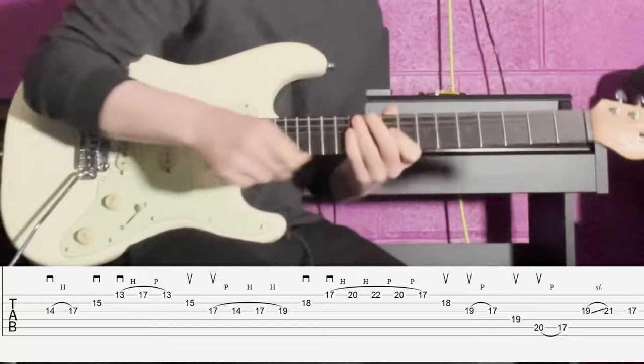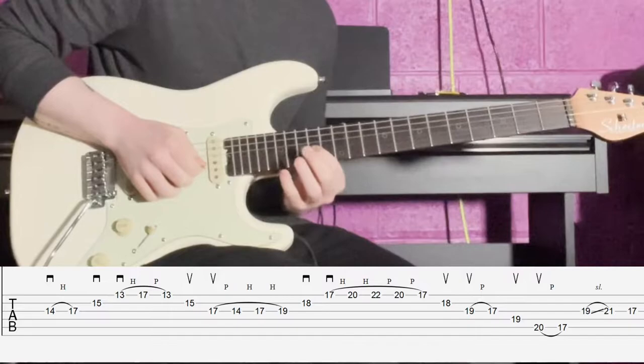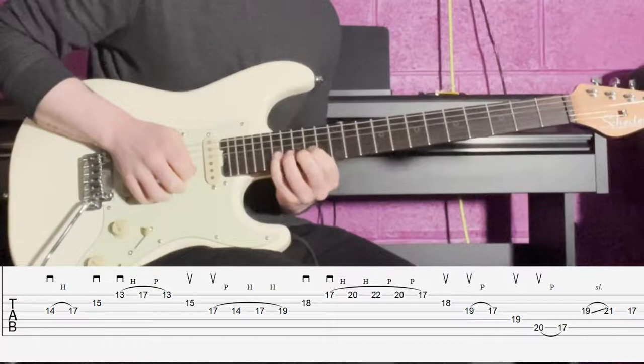We're going to start off by playing the 14th fret here on the G string. We're hitting that with a down pick. Then we're going to hammer on to fret number 17 on the same string. That's your perfect fifth in a D minor seven arpeggio.